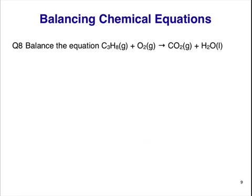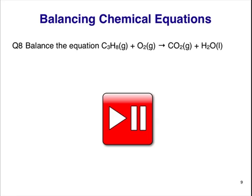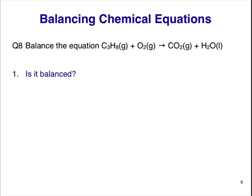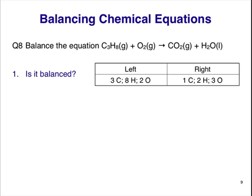This is our final question today. Balance the equation C3H8, propane, plus O2, producing CO2 plus water. Pause the video now. First we'll count up the atoms in the equation. There are 3 C atoms on the left and only 1 on the right. We can already see this is not balanced. Finishing up, we have 8 H atoms on the left and 2 on the right, and 2 O atoms on the left and 3 on the right. Be careful when atoms appear in two substances on the left or the right.